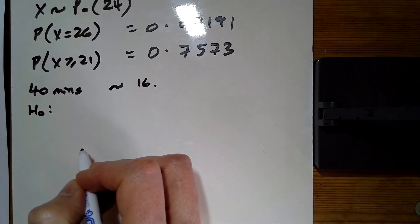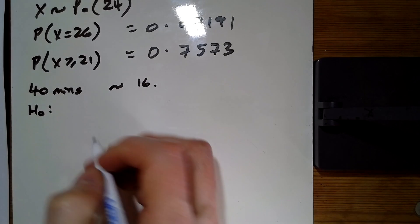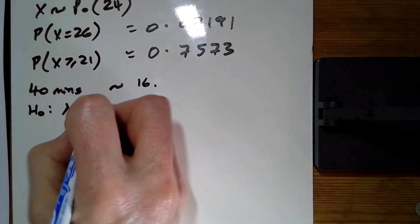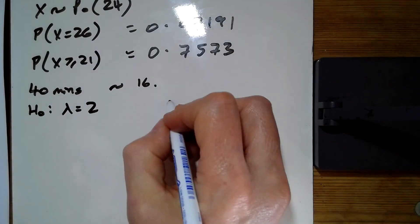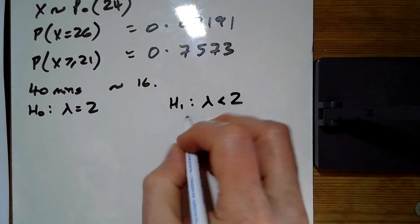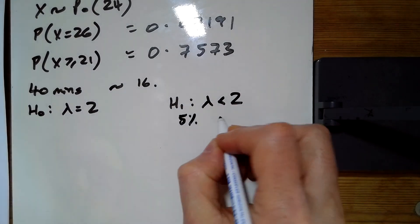Test at 5% whether or not there is evidence of a decrease. So H₀, the null hypothesis, is lambda is still 2 as it was before, and the alternative is a decrease, so less than 2. We're doing 5% and one tail.